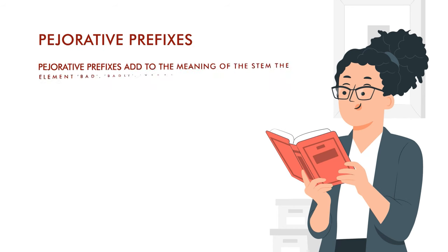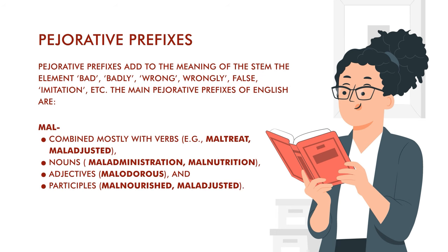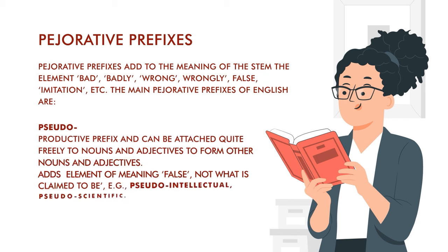Then we have pejorative prefixes, which carry the element of 'bad,' 'wrong,' 'wrongly,' 'imitation,' or 'false.' For example, 'mal-' is usually with verbs — 'maltreat somebody'; with nouns — 'maladministration,' 'malnutrition'; with participles — 'malnourished,' 'maladjusted.' Then 'mis-' also conveys bad, wrong, improperly: 'mishandled,' 'mislead,' 'misguided,' 'misfortune' with a noun, 'misrule.' And 'pseudo-' is attached freely to nouns and adjectives: 'pseudo-intellectual,' 'pseudo-scientific.'